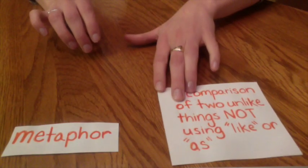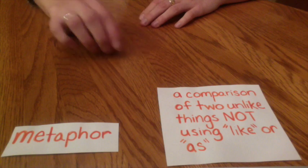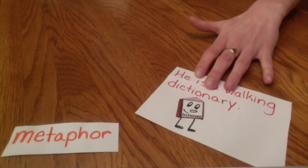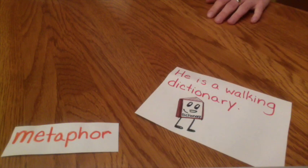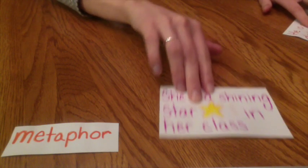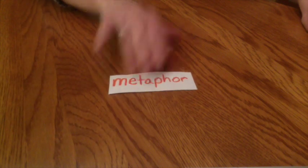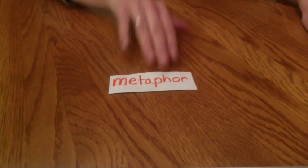But metaphors compare two unlike things and they don't use like or as. So he is a walking dictionary — we're comparing him to a dictionary. Or she is a shining star in her class. Neither of those use like or as, so they're metaphors.